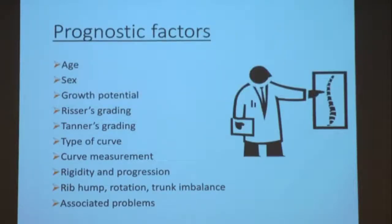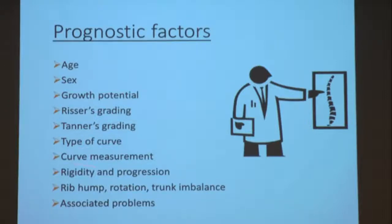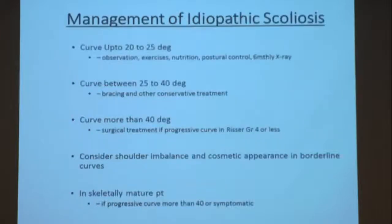Remember the prognostic factors. When someone asks if surgery is required, consider: age and sex of the patient, growth potential indicated by Risser grading and secondary sexual characters, type of curve — congenital, idiopathic, etc., curve measurement, rigidity and history of progression, degree of rotation, trunk imbalance, and associated neurological problems.